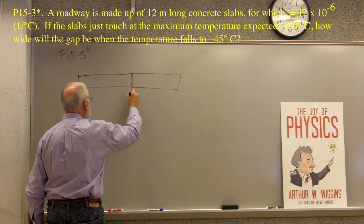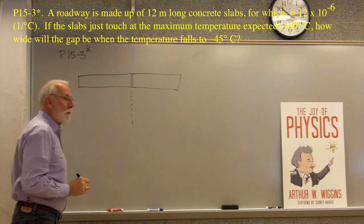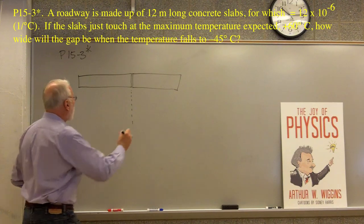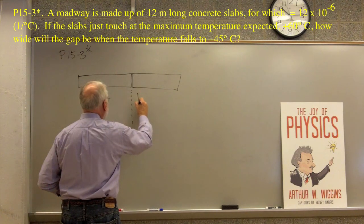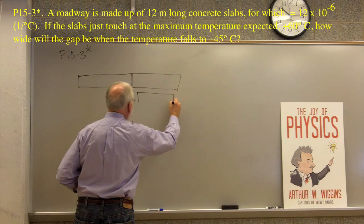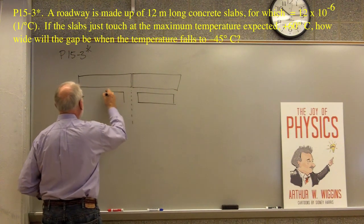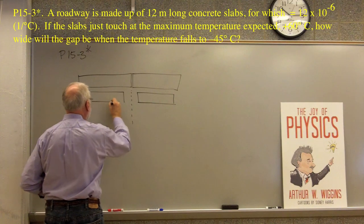That's at the maximum temperature. What happens when the temperature falls a lot? Well, then the slabs shrink. So it'll shrink a little bit this way, and it'll shrink a little bit that way. Shrink a little bit here, shrink a little bit there, like so.